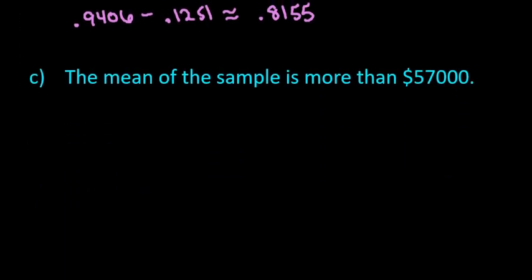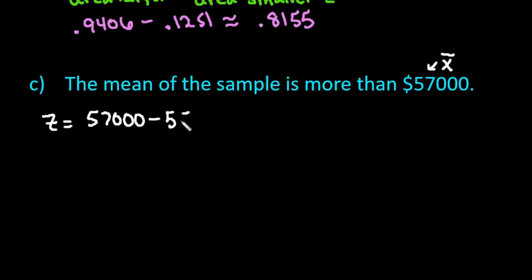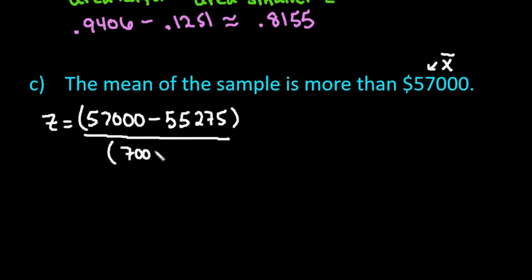The last scenario is when we have 'greater than.' Again, the first thing you do is find your z-score. Our x-bar is $57,000, minus the population mean of $55,275, divided by $7,000 over the square root of 40. When I plug this in, I get approximately 1.56.